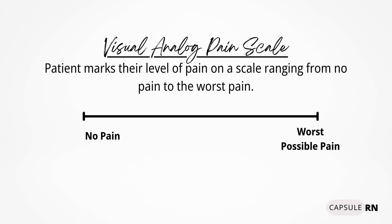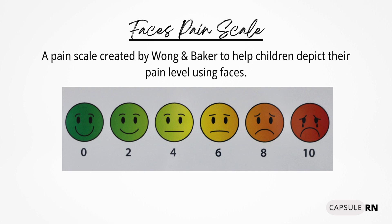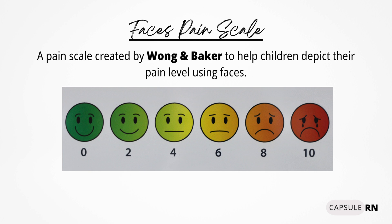A third type of pain scale is a visual analog scale, in which the patient can mark their level of pain somewhere on the scale, ranging from no pain to the worst possible pain. Next is a pain scale used for pediatric patients called the FACES pain scale. It was created by two women whose last names were Wong and Baker, so you will also hear it called the Wong-Baker scale. With this scale, a child points to the face that best represents how bad their pain is. This scale is commonly used for children in preschool or above.